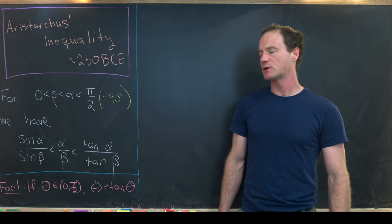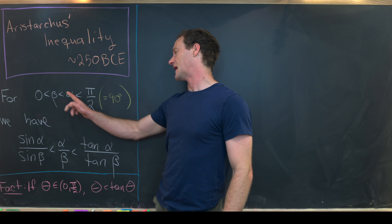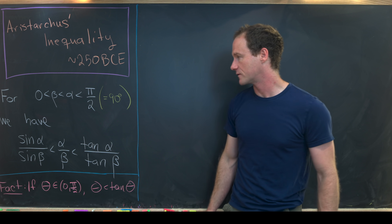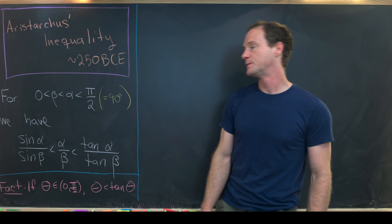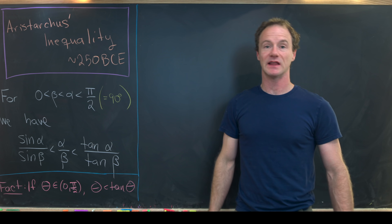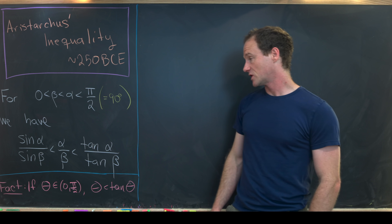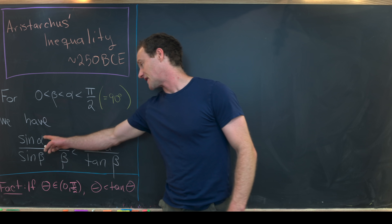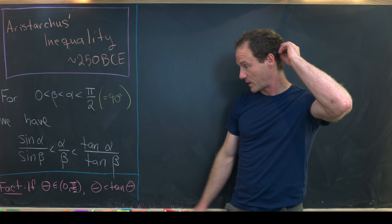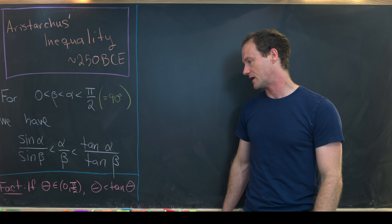Our goal is to suppose that beta and alpha are less than pi over 2, they're bigger than zero, and beta is less than alpha. Then the result is that sine of alpha over sine of beta is less than alpha over beta, which is less than tan alpha over tan beta.